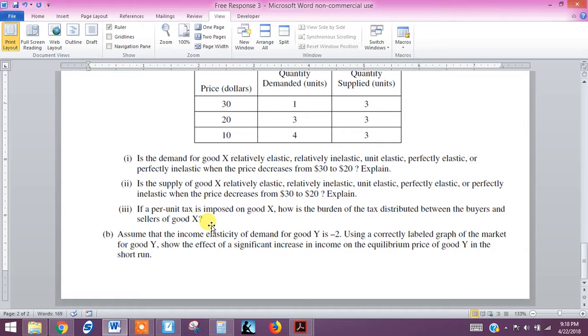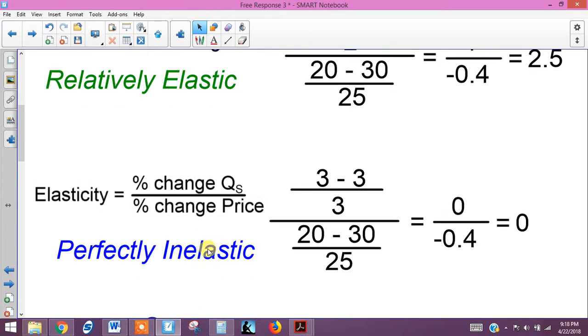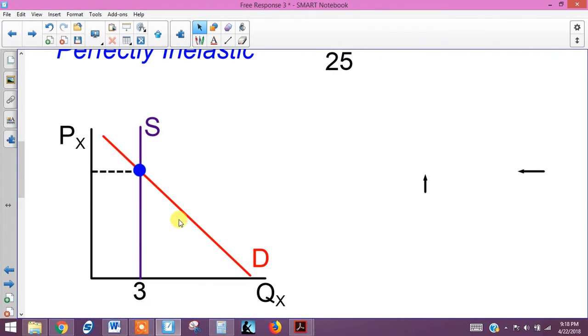We're looking at what would happen if we had a per-unit tax imposed on good X. How would the burden of the tax be distributed between the buyers and sellers of good X? Well, this is a little bit unique since we have a perfectly inelastic supply. So that tax is going to push the cost up to here. And since we can't move off this vertical supply, if the tax is this amount right here...